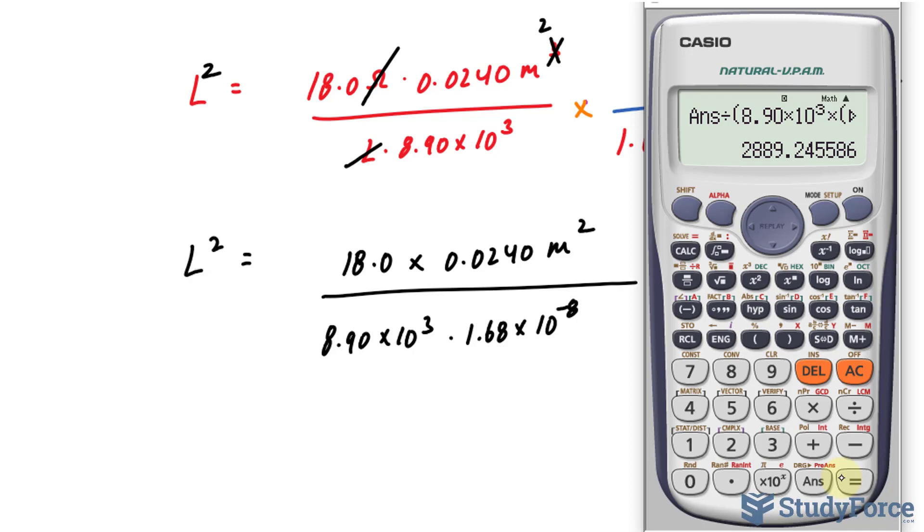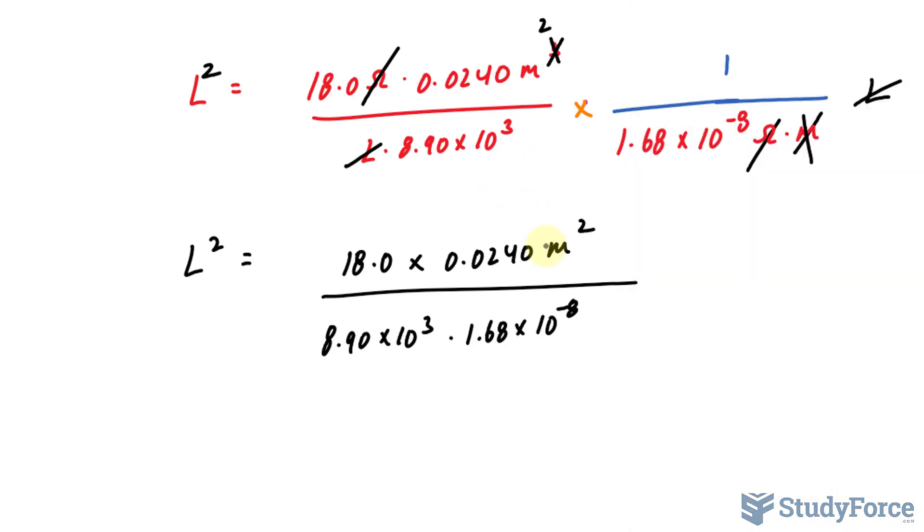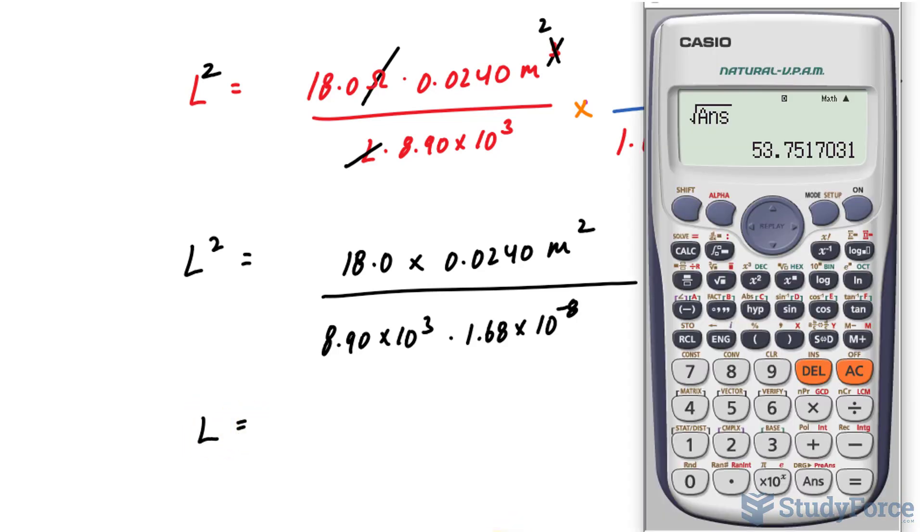We end up with the following length squared. Remember, it's L squared. I'll square root both sides. So I'll square root this number. And remember, if you square root meters squared, you end up with meters. Keep that in mind. So I have length is equal to 53.751 meters.